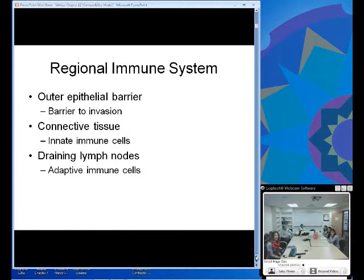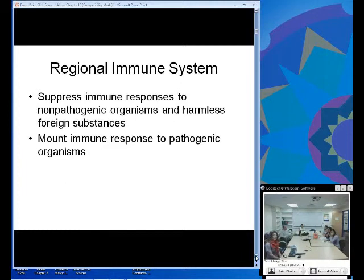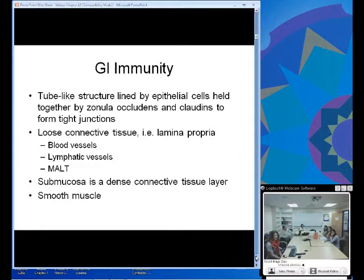In general, it consists of an outer epithelial barrier, connective tissue, and draining lymph nodes. A lot of the role of the regional immune system, counter to what we've learned, is actually to suppress immune responses because they have such an intense burden of non-pathogenic organisms at any given moment. But of course, this is the primary place where the immune response is mounted to pathogenic organisms.